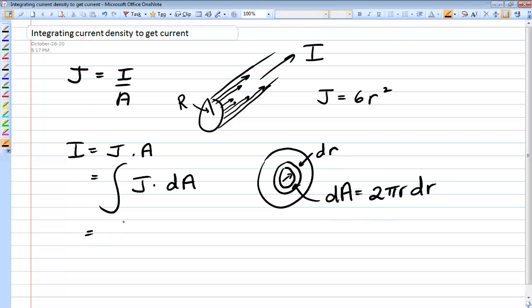So you put that into the integral and it becomes J 2 pi r dr. If you know J is a function of r, you can pop that in, 6r squared, 2 pi r dr.